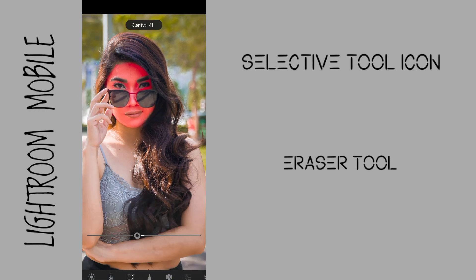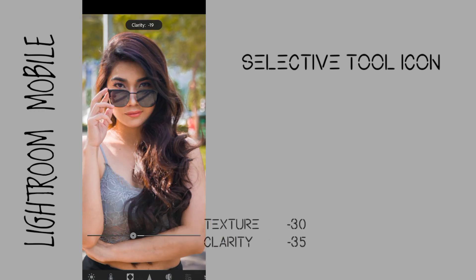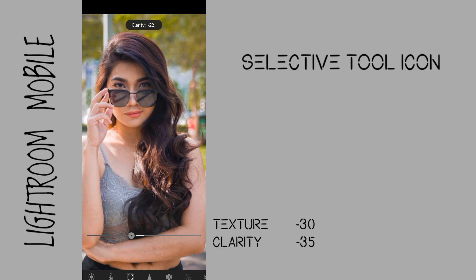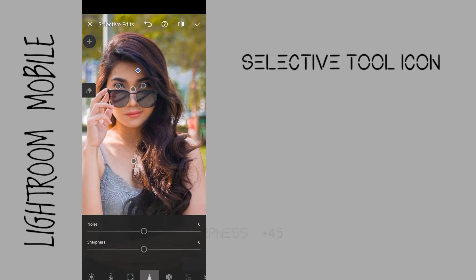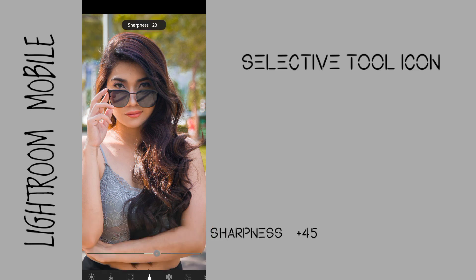On the selective tool, tap to the effects icon and adjust the clarity to negative 35 and texture to negative 30 to smoothen the skin. Then tap the details icon and pull up the sharpness to plus 45 to bring back the details on the skin.